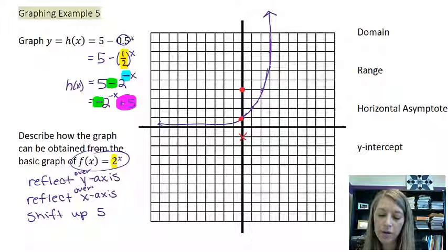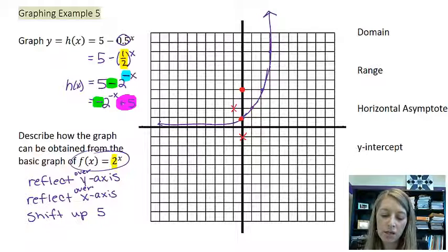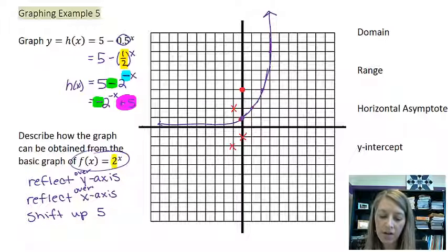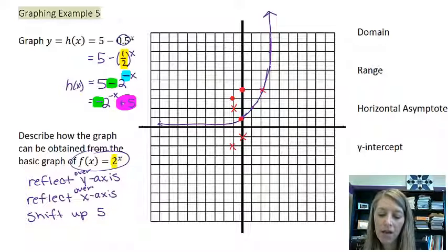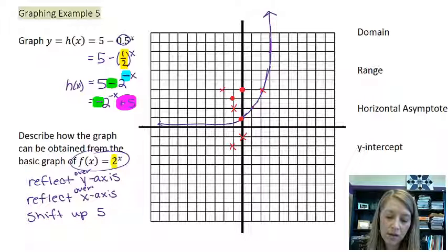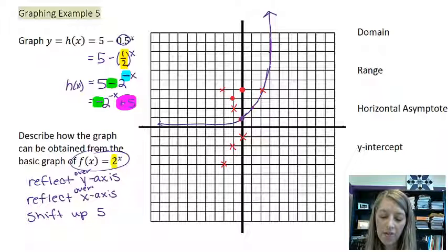This one at (1,2), my original point: if I reflect it horizontally it goes here, if I reflect it vertically it goes here, and then I shift it up 5 units. At this point, if I reflect it horizontally it goes here, if I reflect it vertically it goes here, and then I shift it up 5 units. My last one: reflect it horizontally, reflect it vertically, shift up 5 units.